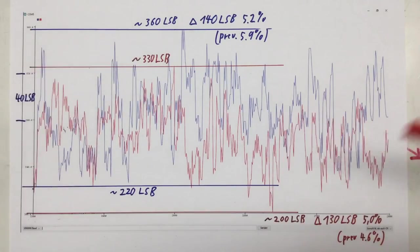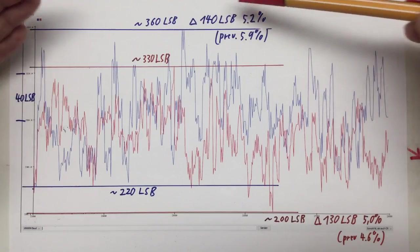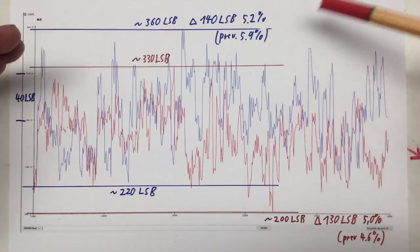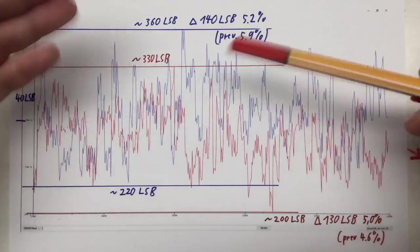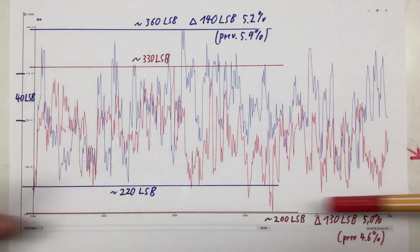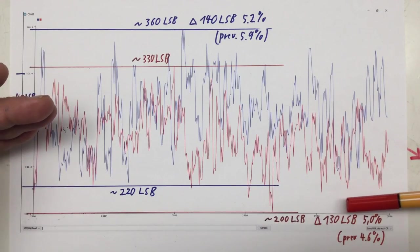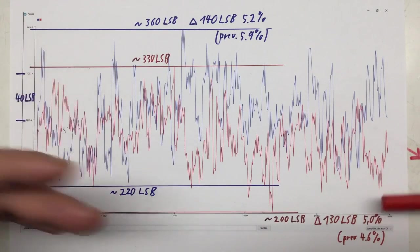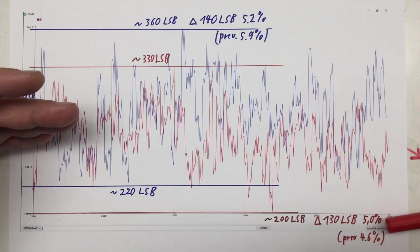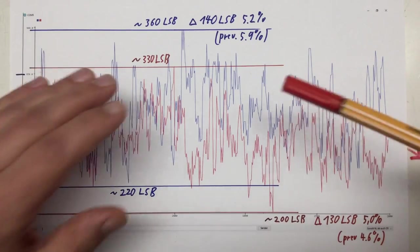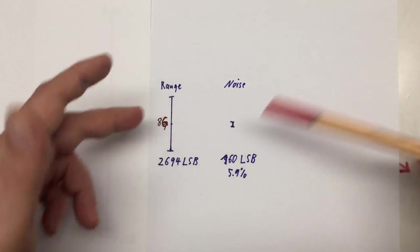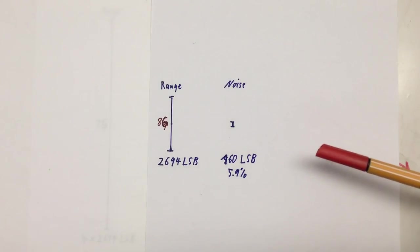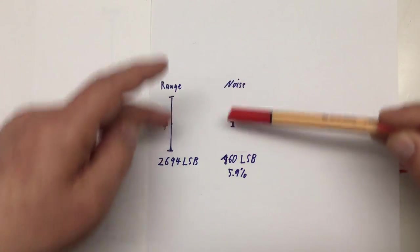On the blue X sensor we now have a delta of 140 LSBs — that's 5.2%, previously 5.9%. On the Y sensor we have 130 LSBs — 5%, which is even a little worse than the previous 4.6%. Neither change is statistically significant. Now let's talk about the relation between noise and signal range.